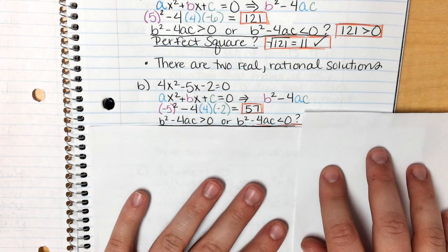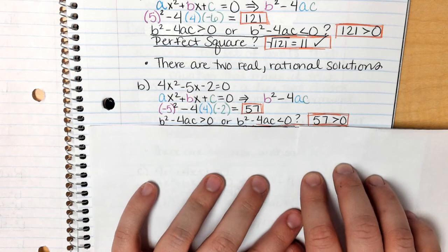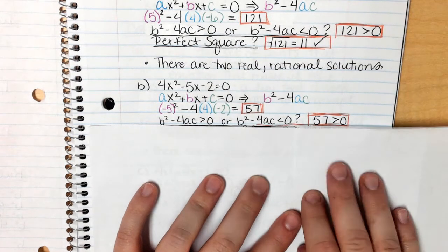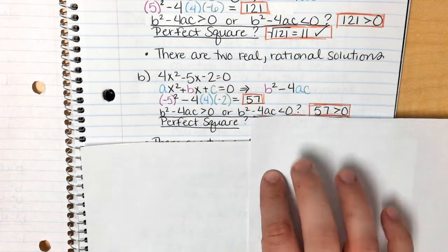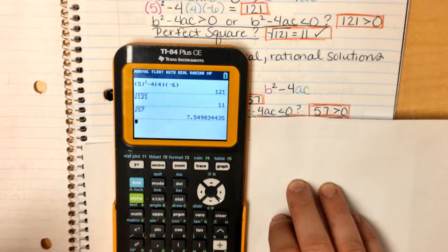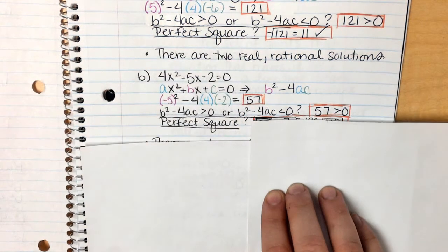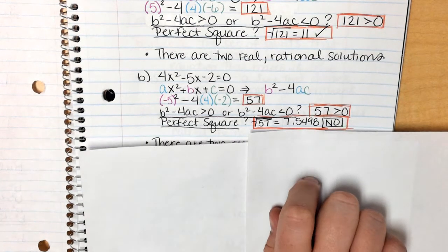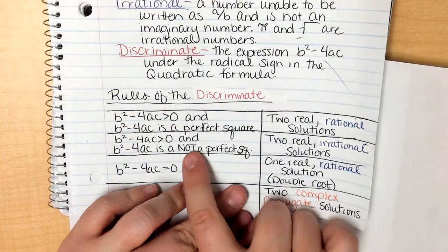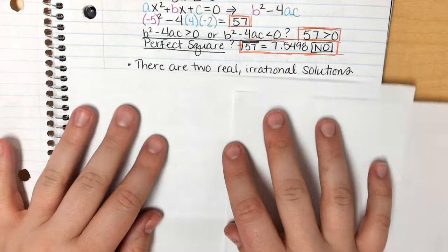So is 57 bigger than 0 or smaller than 0? 57 is obviously bigger than 0. So again, it's going to be one of the first two. We're going to have two real solutions. It's just is it rational or irrational? We don't know. The second question is, is it a perfect square? So we take our calculator, square root of 57, we click enter. It gives me a decimal. That means it is irrational. That is not what I want. So since it's irrational, it is not a perfect square. So two real numbers gives me two real irrational solutions.